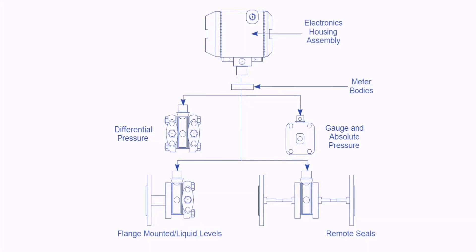Before going further, I will explain the different types of transmitter body available. The top of the transmitter housing contains the electronic assembly. There are four different types of transmitter body: one is the differential pressure transmitter with high-pressure and low-pressure legs; the next is the gauge pressure transmitter with only one tapping. At the bottom left you can see the flange model, mainly used for measuring liquid level, with no impulse tubing. At the bottom right you can see the remote seal type, where the high-pressure and low-pressure tubing is replaced with a diaphragm and capillary tube.